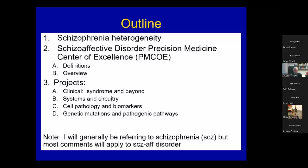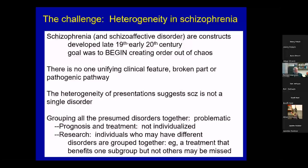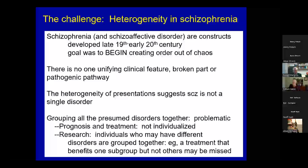So here's the challenge. Schizophrenia is a heterogeneous disorder. Schizophrenia and schizoaffective disorder are constructs developed in the late 19th and early 20th century with the goal to begin creating order out of chaos. This is the work of Kraepelin and others, including Eugen Bleuler. They recognized even then that they were just beginning the process of defining these diseases and knew there would be much to be sorted out over time. The problem, recognized then and still a problem now, is that there's no one unifying clinical feature, no broken part, no one pathogenic pathway that defines these disorders.